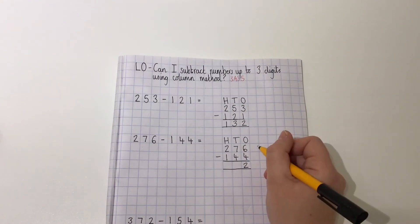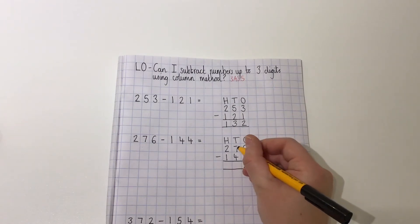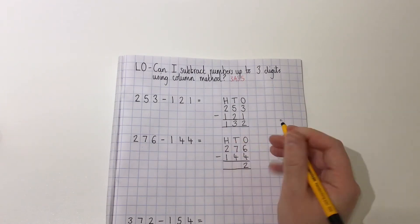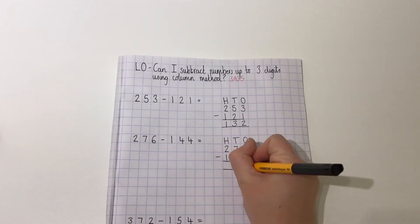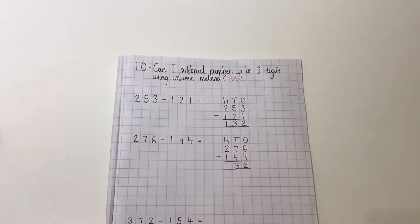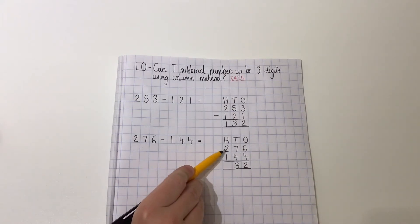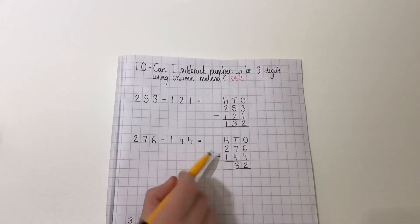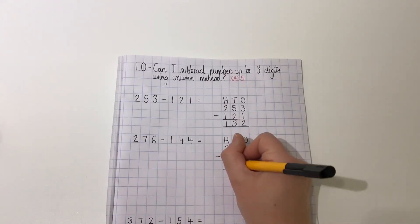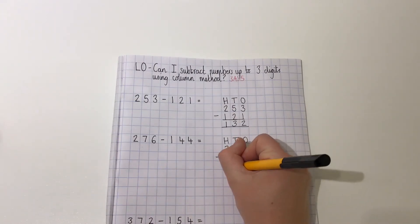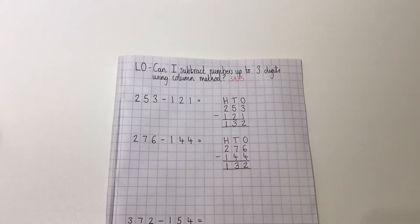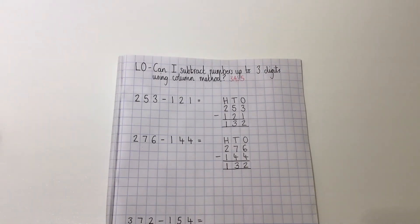We then move over to the tens where we have seven take away four, which is three. And then finally, in the hundreds, we have two take away one, which equals one. So 276 take away 144 equals 132.